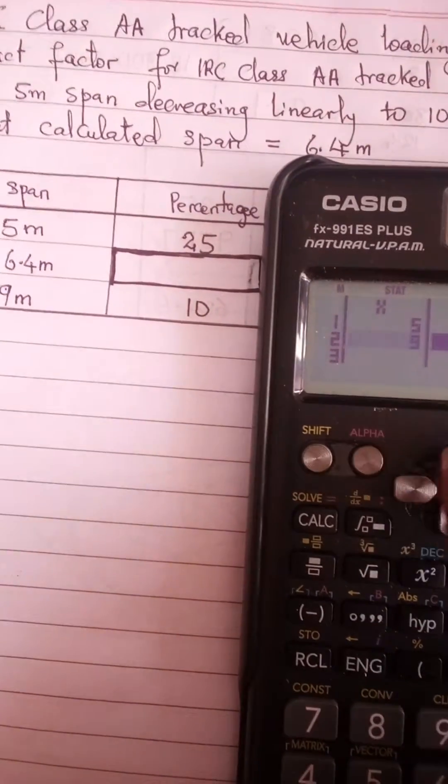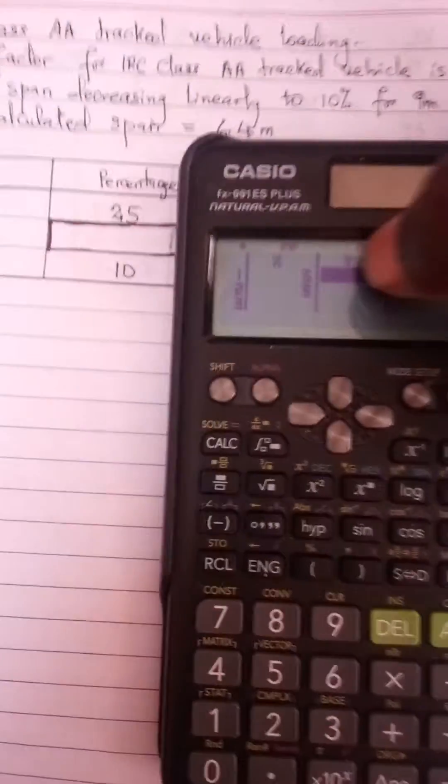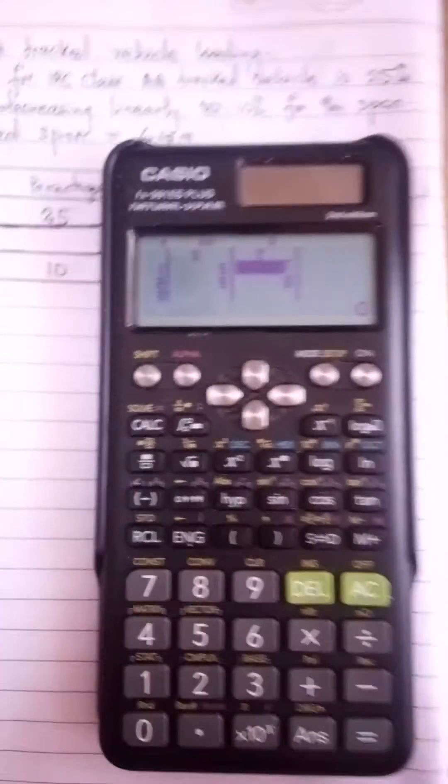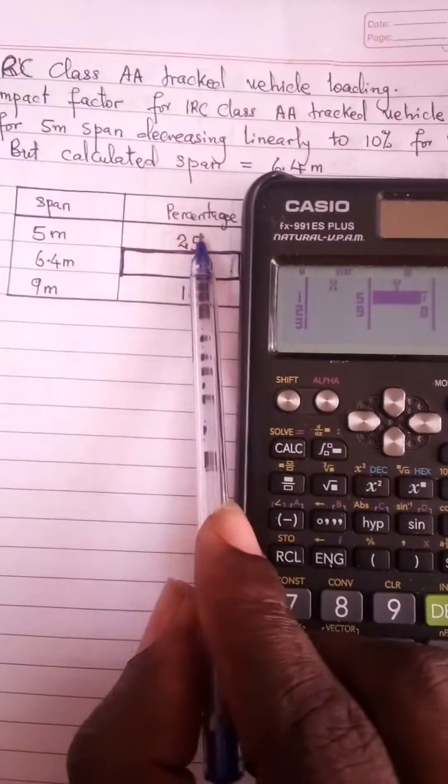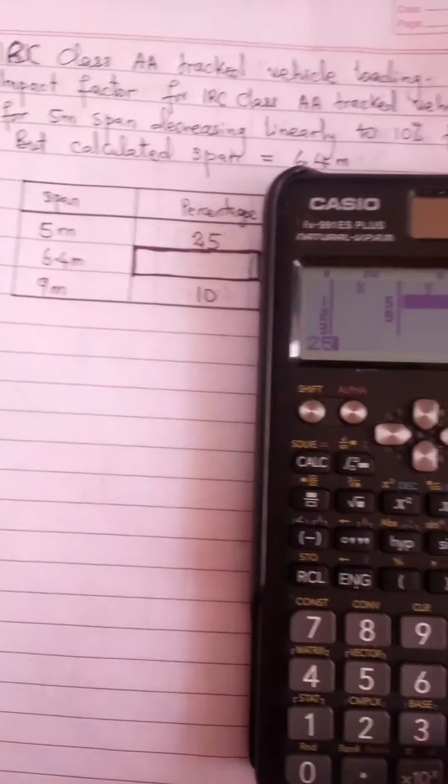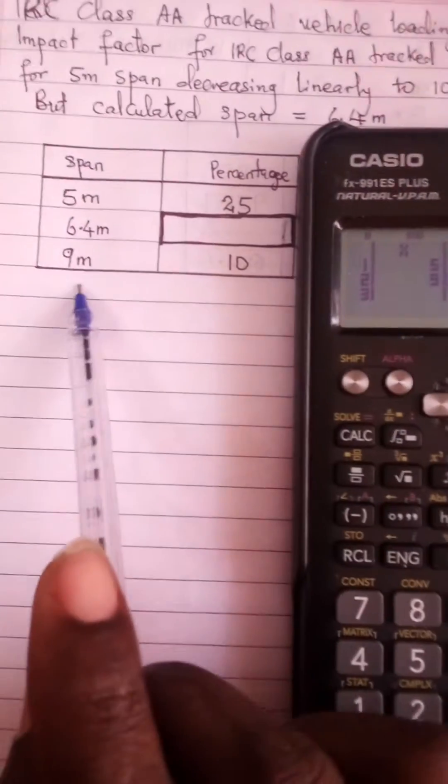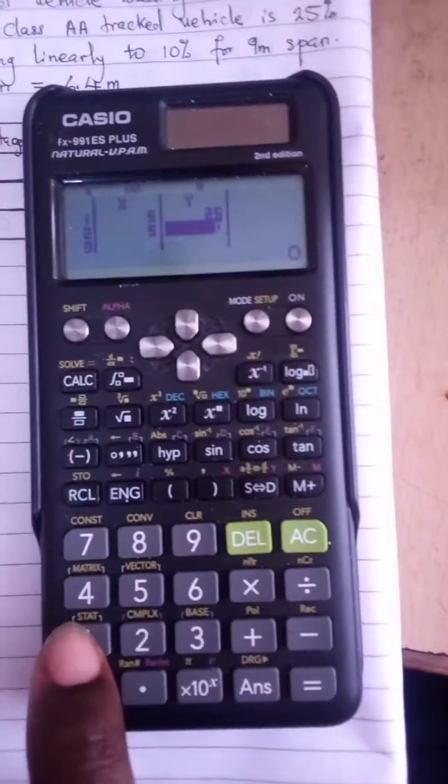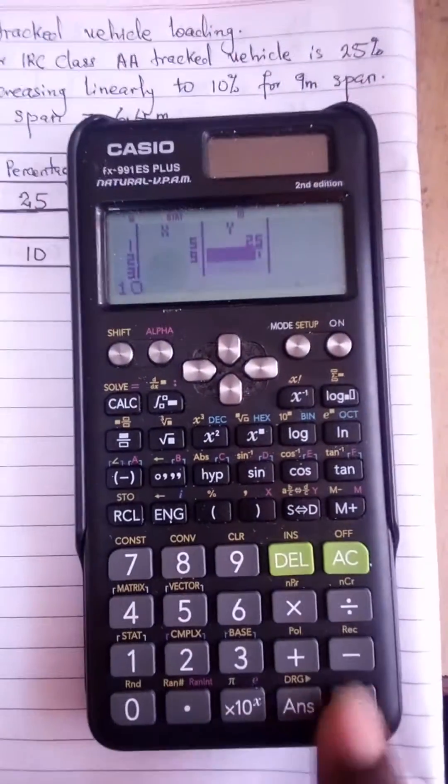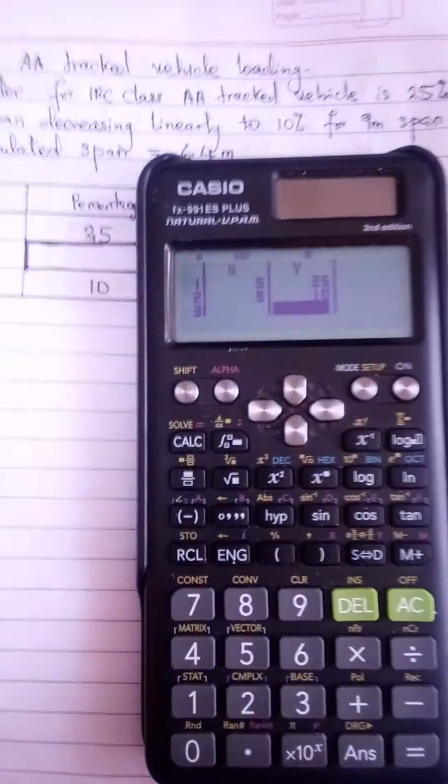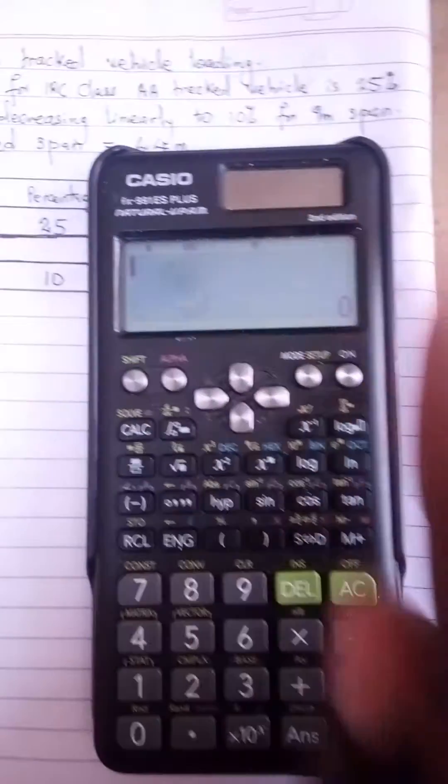Once I'm done I will press equal to and move the cursor using the arrow keys to here, to the Y column, starting on 5. I have 25, so I will type 25 equal to. Directly on 9 I have 10, so I will type 10 equal to. When you are done, you just press SC and you are coming back to the normal screen.